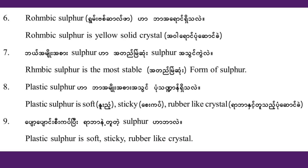Rhombic sulfur can exist in allotropic forms. Rhombic sulfur is a solid crystal. Rhombic sulfur is the most stable form of sulfur.